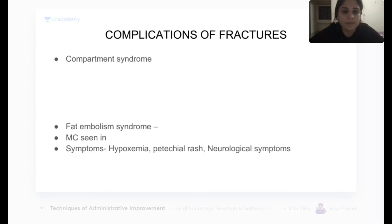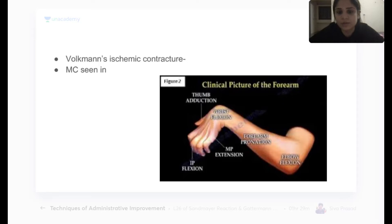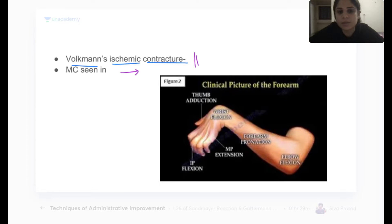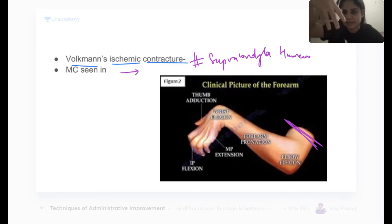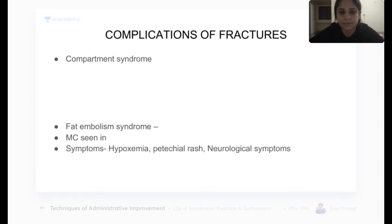Next is compartment syndrome. Volkmann's ischemic contracture is a complication of compartment syndrome, seen in supracondylar fracture of the humerus. Due to cutoff of blood supply to the hand, the entire elbow gets flexed, the forearm pronated, and the wrist flexed. The hand remains in that position permanently — it is a permanent contracture deformity.